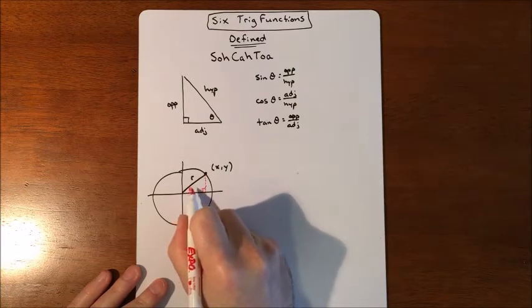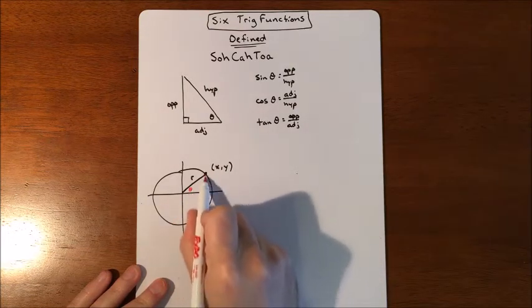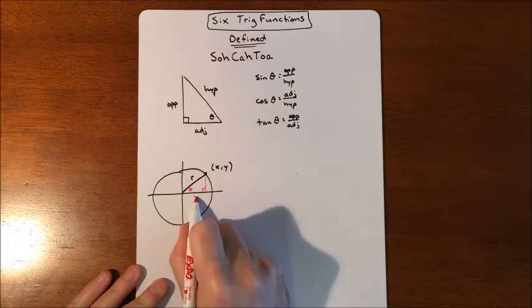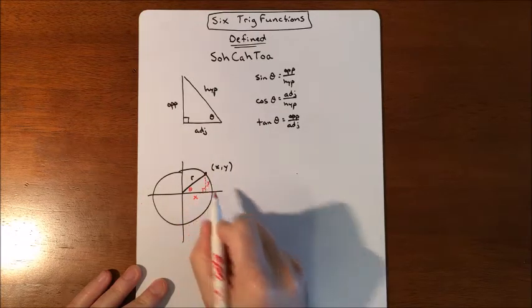This is our angle that we're focused on. And we need a horizontal length and a vertical length. Well, those are actually just the x's and the y's. So x is your horizontal, y is your vertical.